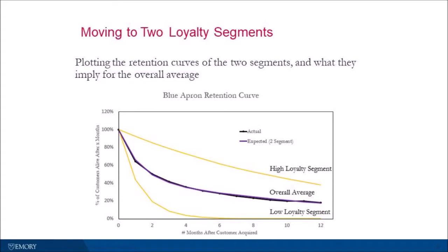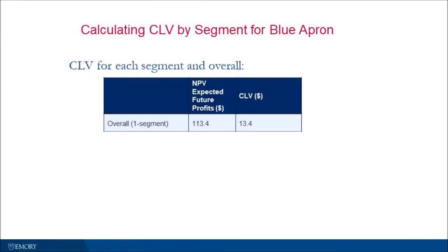What we showed was that using one single retention rate for all customers Blue Apron is acquiring really doesn't do a very good job of capturing the variation we see in the observed retention curve. But when we move to two loyalty segments — one with high loyalty and one with low loyalty — we fit the data very, very well. If we assume one segment, we infer a value of customers after they've been acquired of about $113. When we subtract off the $100 spent to acquire customers, that gives us the $13 CLV.